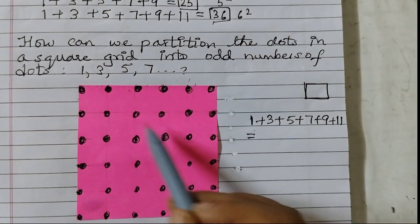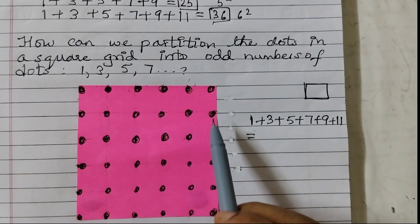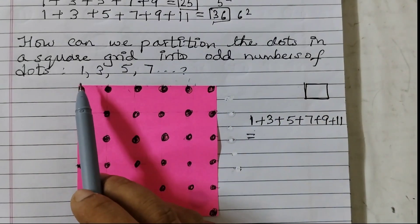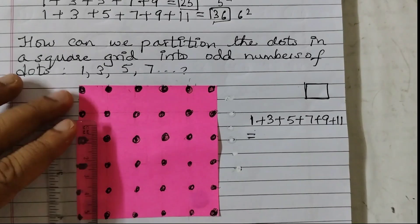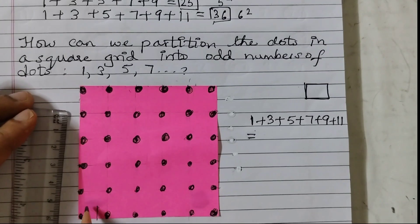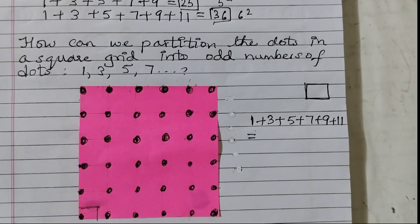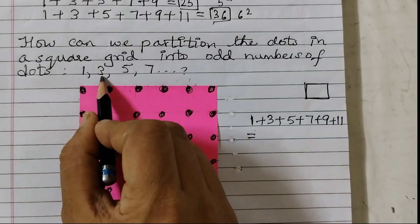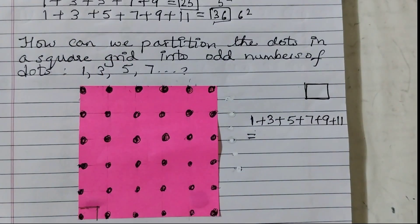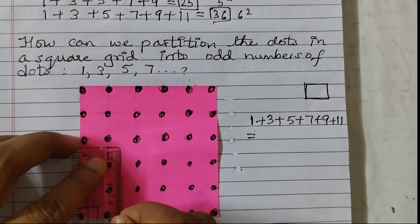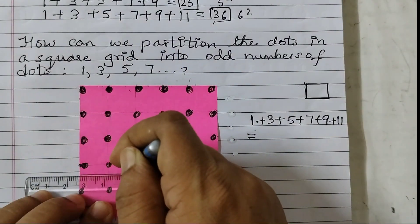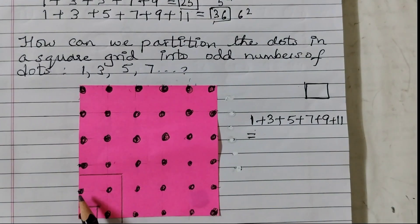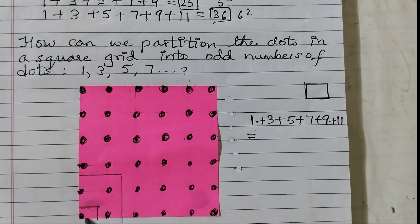So I have taken 36 dots here. This is square paper and I have put 36 dots, and we are going to do partition of the dots in numbers like 1, 3, 5, 7. You can take a ruler and a pencil. First, draw a line like this — one line here and one line here. So now this is just one dot. Next we have 3 — we are going to show 3 dots. So we will draw till here and then like this. Now you see here 1, 2, 3 — 3 dots.